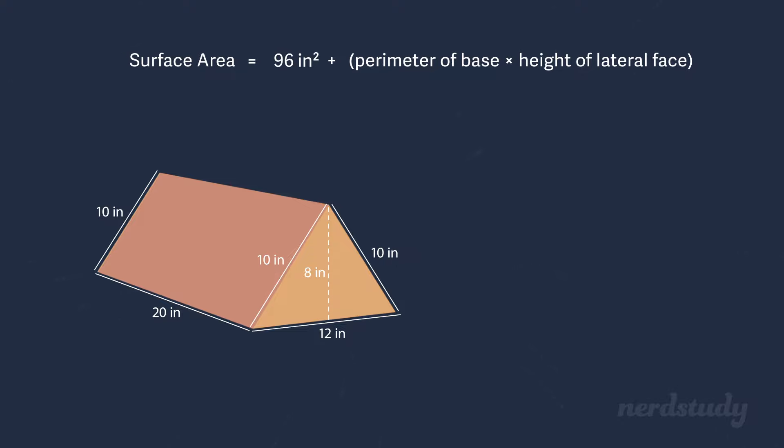Now, what's the perimeter of this triangular base? Well, conveniently enough, we've got the side lengths of the triangular base given right to us. It's 10 plus 10 plus 12, which equals 32 inches.